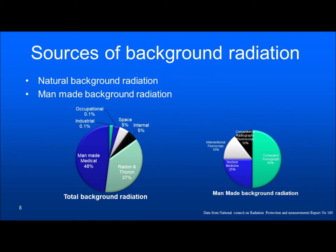While learning about radiation protection, one of the important things to know is the sources of radiation. One of the main sources is background radiation. This background radiation can be classified into two: natural background radiation and man-made background radiation. I took this data from the U.S. NCRP report — so it is mostly U.S. data, not Indian data.